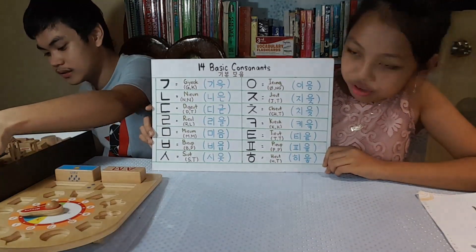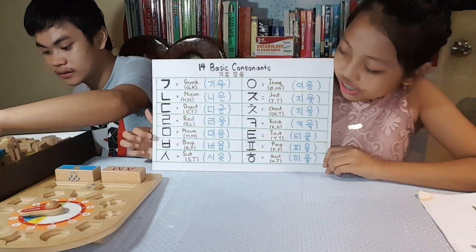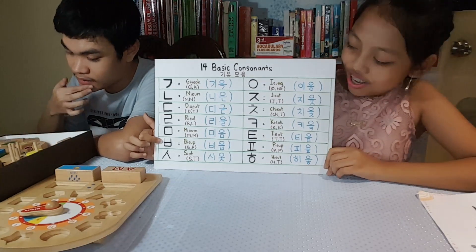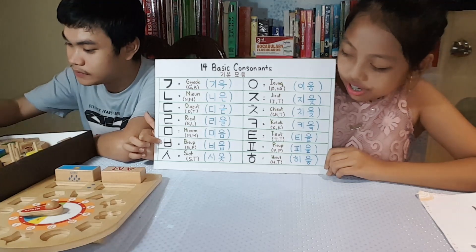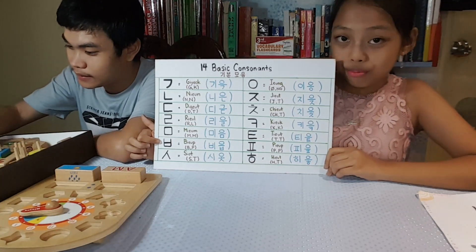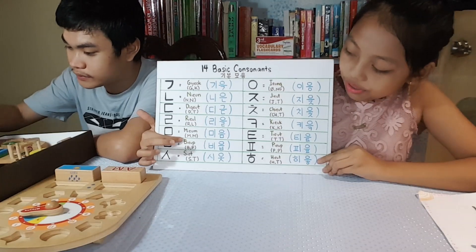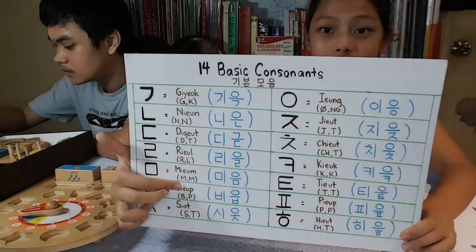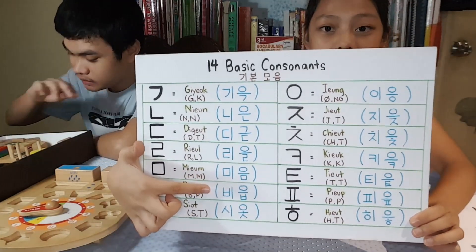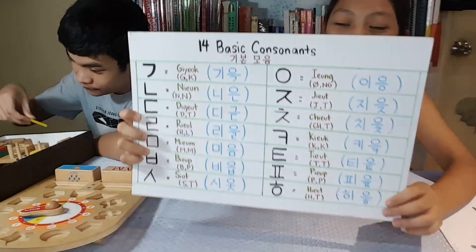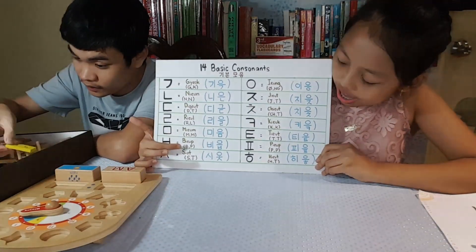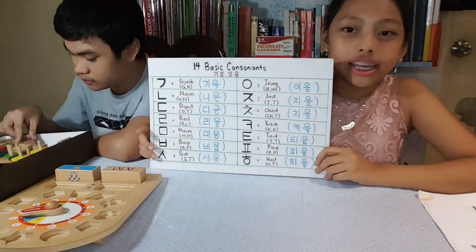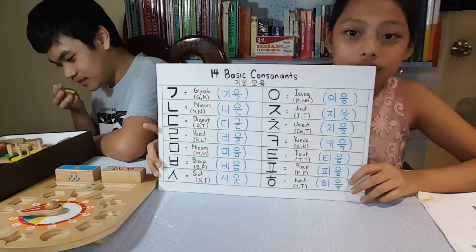The next basic consonant sounds like 'B.' This one is the Korean alphabet character or the Hangul symbol. Over here, we have the romanization name, Bi-up. And this one is the Hangul name. The consonant Bi-up is B sound in the beginning and P sound in the final or in the end.